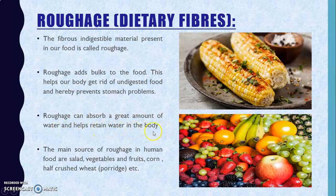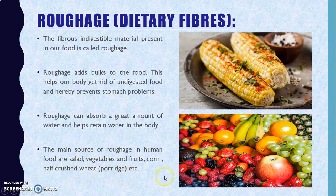Roughage helps retain water in the body. The main sources of roughage in human food are salad, vegetables, fruits, corn, and half-crushed wheat known as dalia. These are rich in roughage, which is very important for the proper digestion of food items in our body.